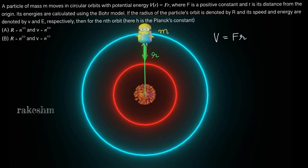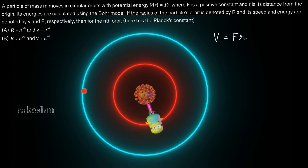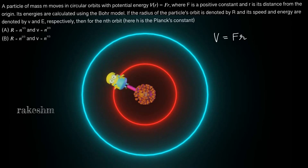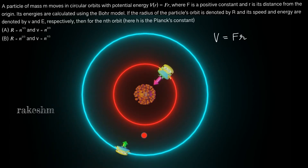Applying the Bohr model for this particle: first, the particle moves in a circular orbit. Second, the energy of each orbit is fixed. Third, the angular momentum of each orbit equals an integral multiple of h by 2π. Also notice that when this particle transitions from one state to another, it can either be in this orbit or in this orbit — it cannot be anywhere in between. It vanishes from here and appears there.